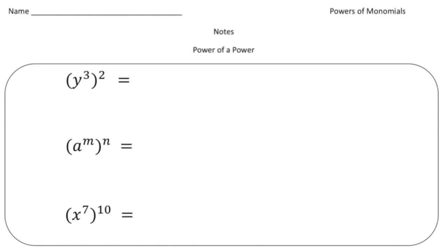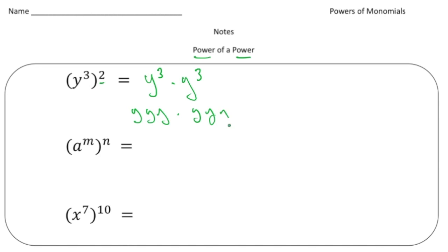We're going to talk about two specific rules. The first one is called a power of a power. Here's our first example: we have y to the third power in parentheses, and that whole thing is raised to the second power. What this really means is y cubed times y cubed, and each y cubed means y times y times y, so altogether there are six y's — the answer is y to the sixth.